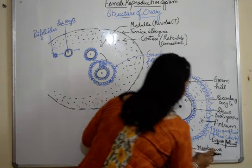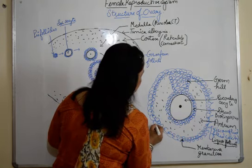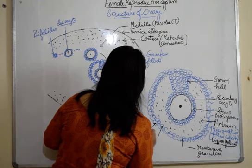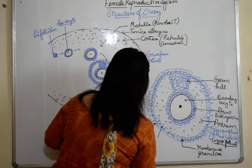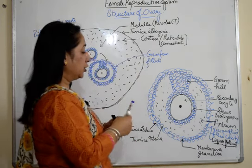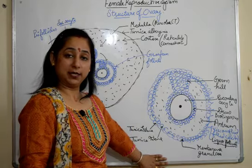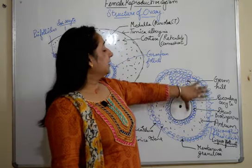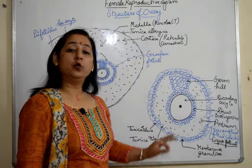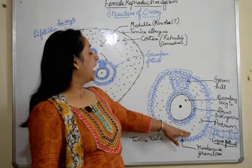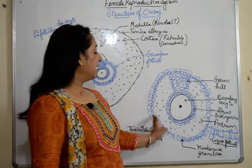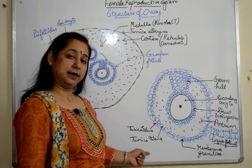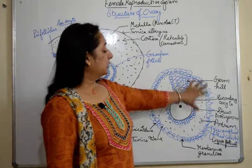The surrounding layer, if we collectively name it, is called the membrana granulosa. Dividing it further: the outer layer is known as tunica externa and the inner layer is tunica interna. So this is the whole structure of the Graafian follicle: the secondary oocyte at the center surrounded by the discus proligerus, the antrum filled with liquor folliculi, and the membrana granulosa divided into tunica externa and tunica interna.